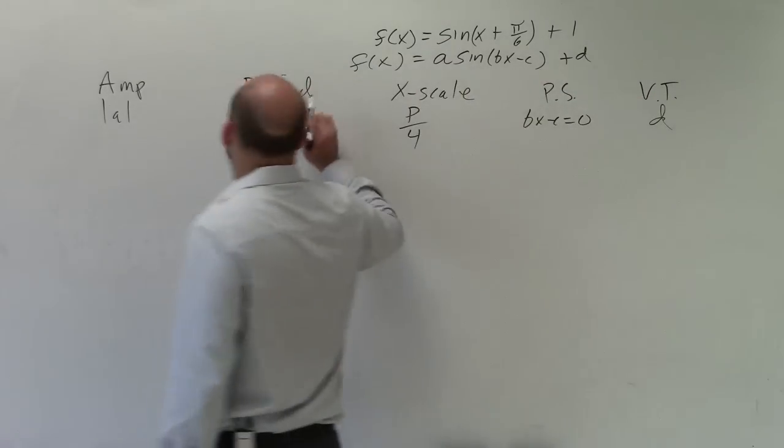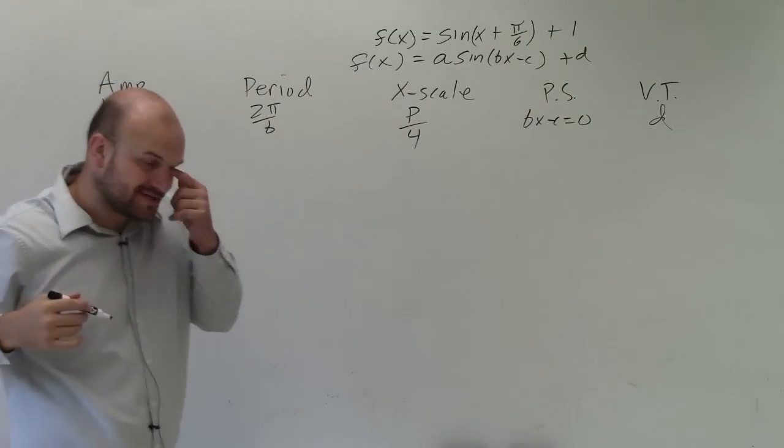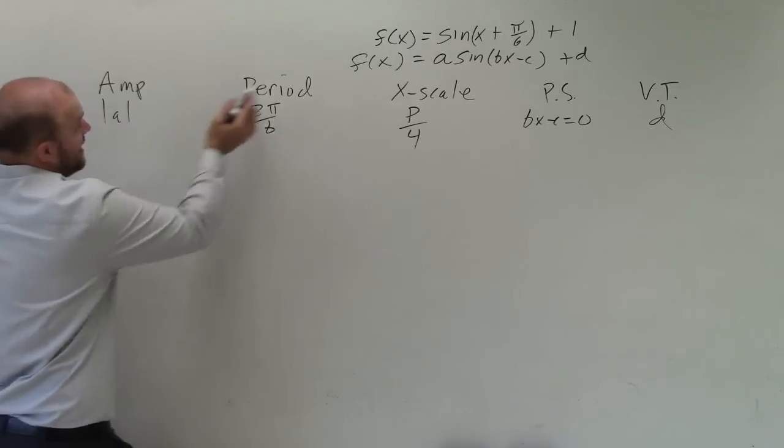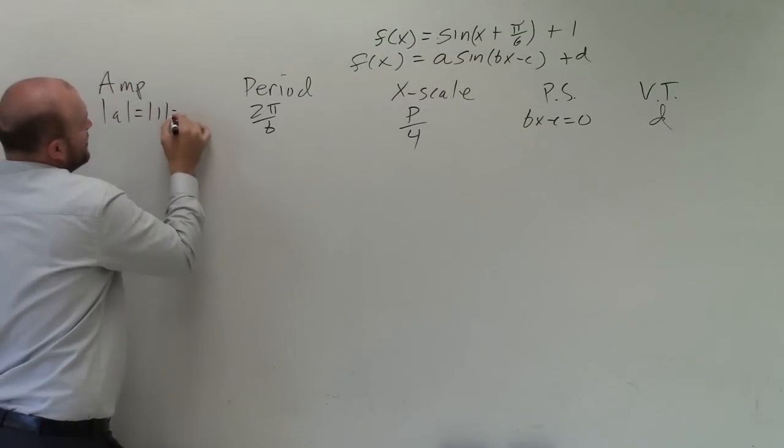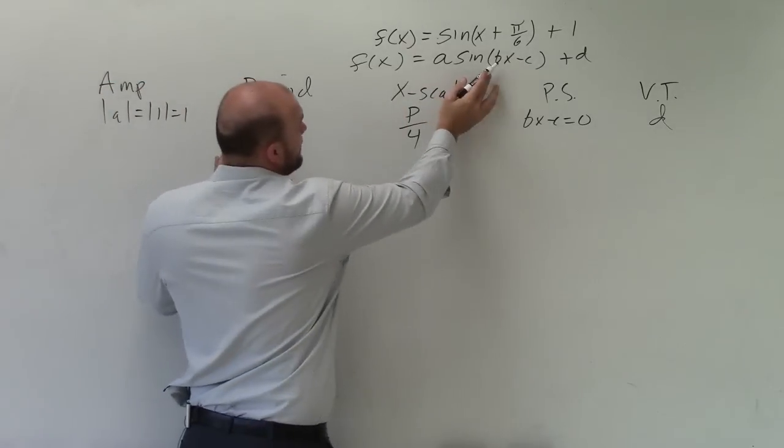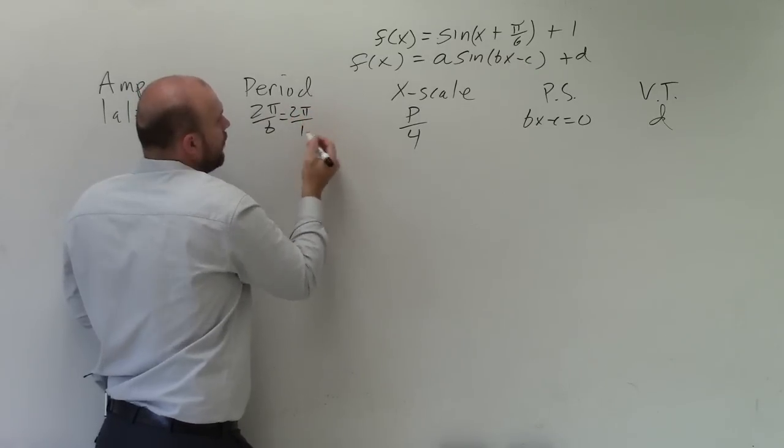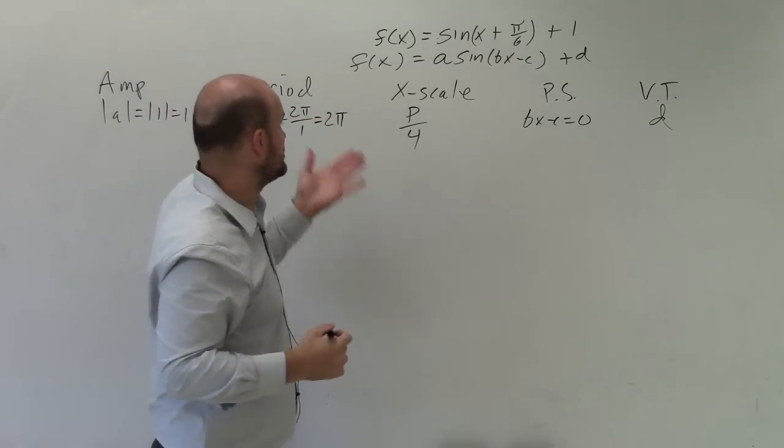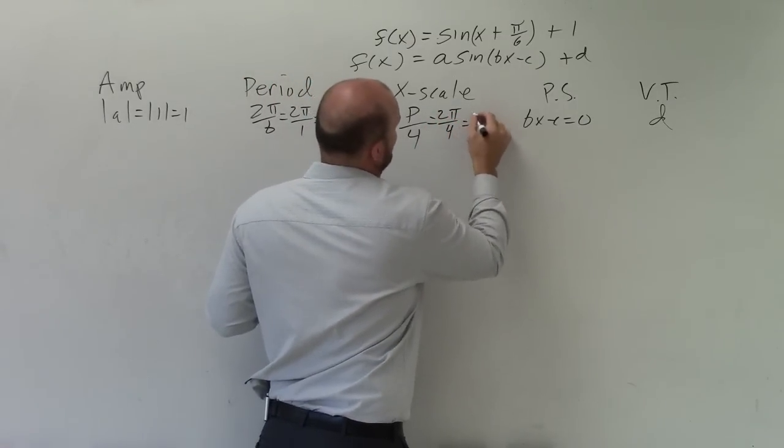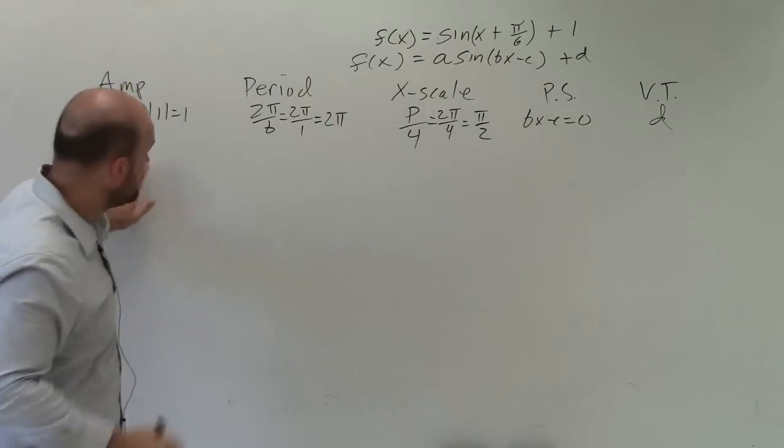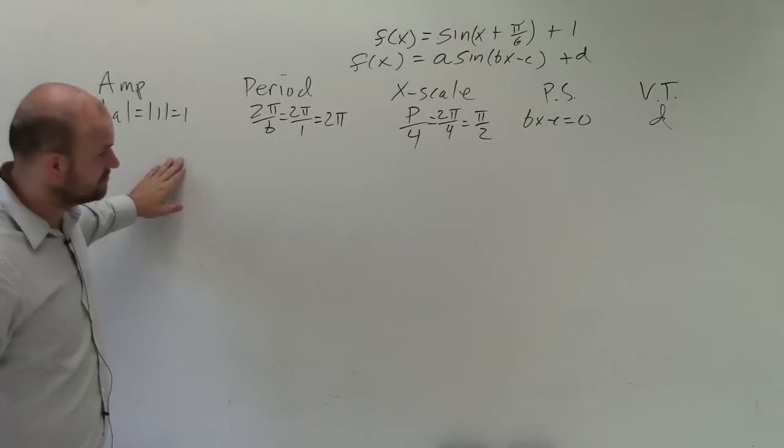So we can look in this equation. Now we're going to be looking up here and seeing what do we have, and how is it going to affect our graph. So our amplitude is our a. Well, we don't have an a. Well, technically we do. It's a 1. So the absolute value of 1 is just 1. Our period is going to be 2 pi divided by b, which in this case again is 1. So 2 pi divided by 1 is just 2 pi. Our x scale is our period divided by 4. So I take 2 pi divided by 4, which equals pi halves.